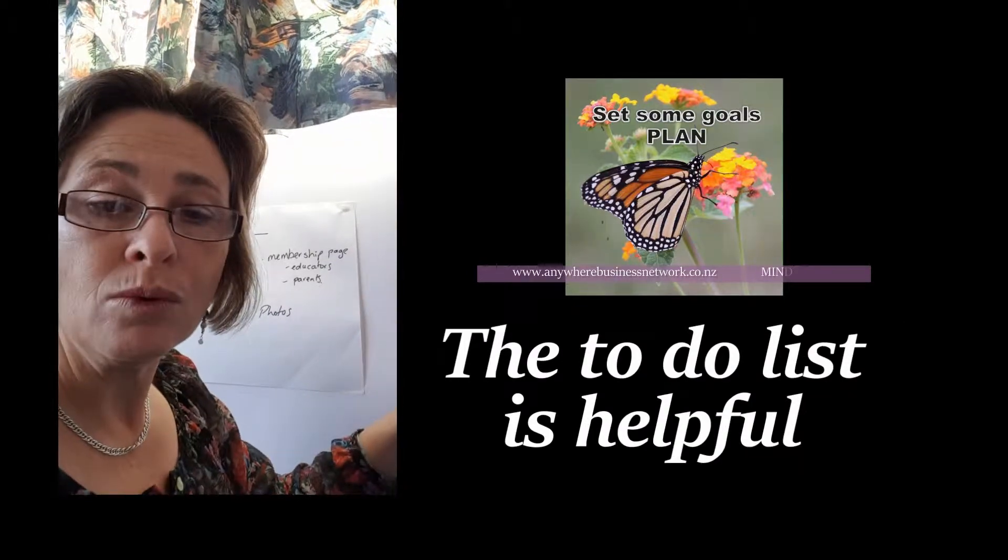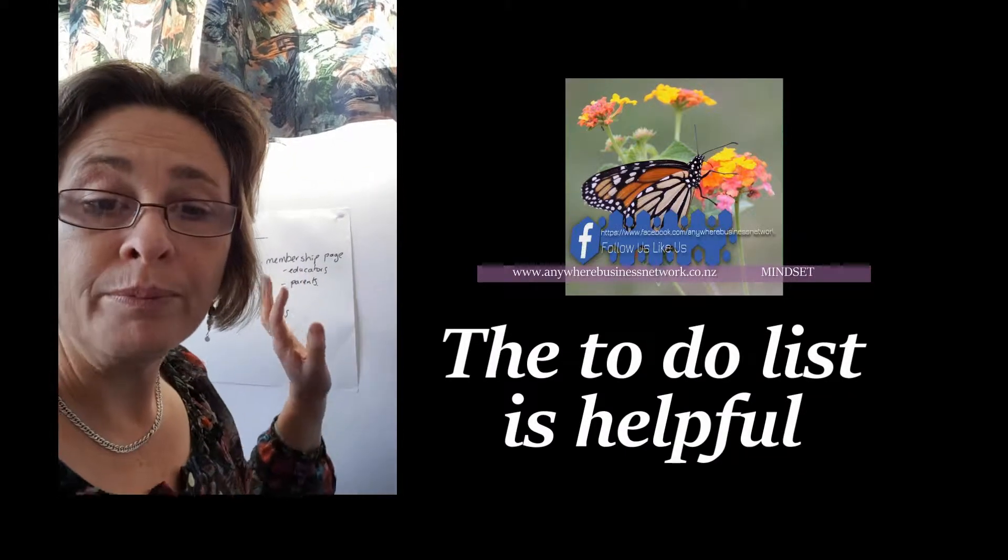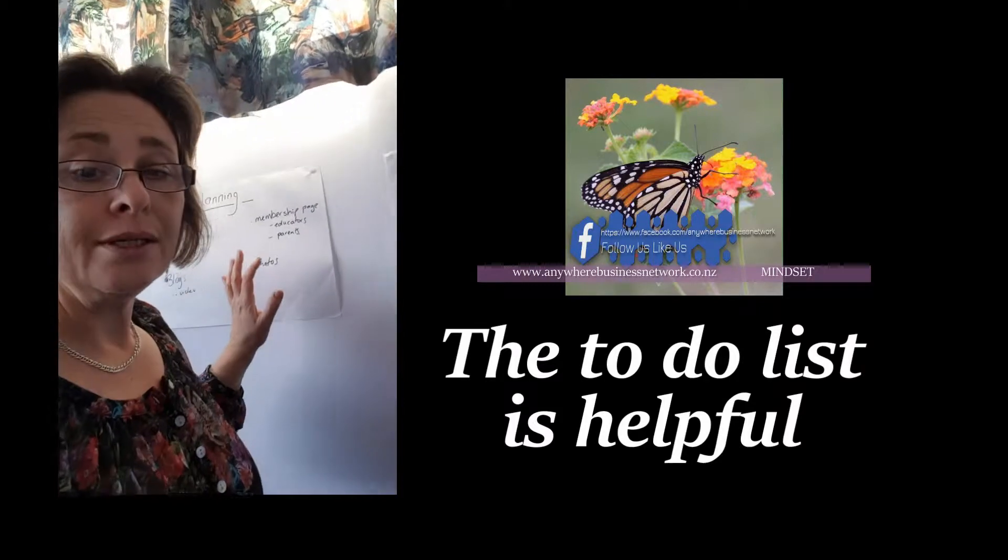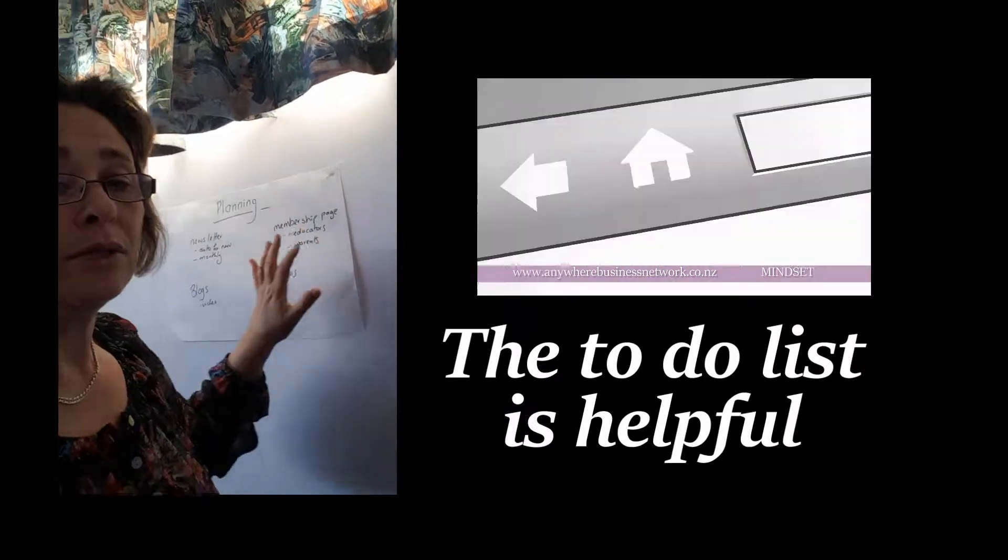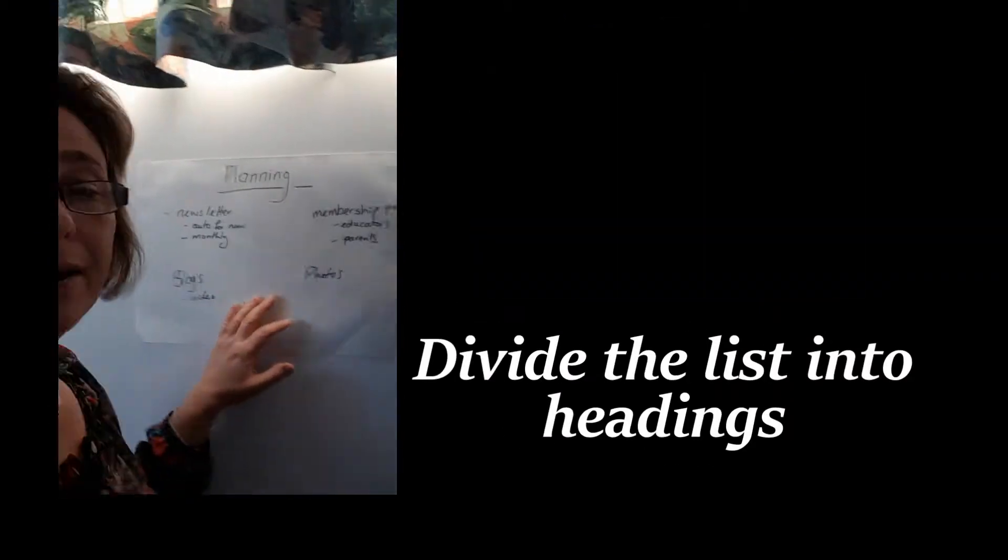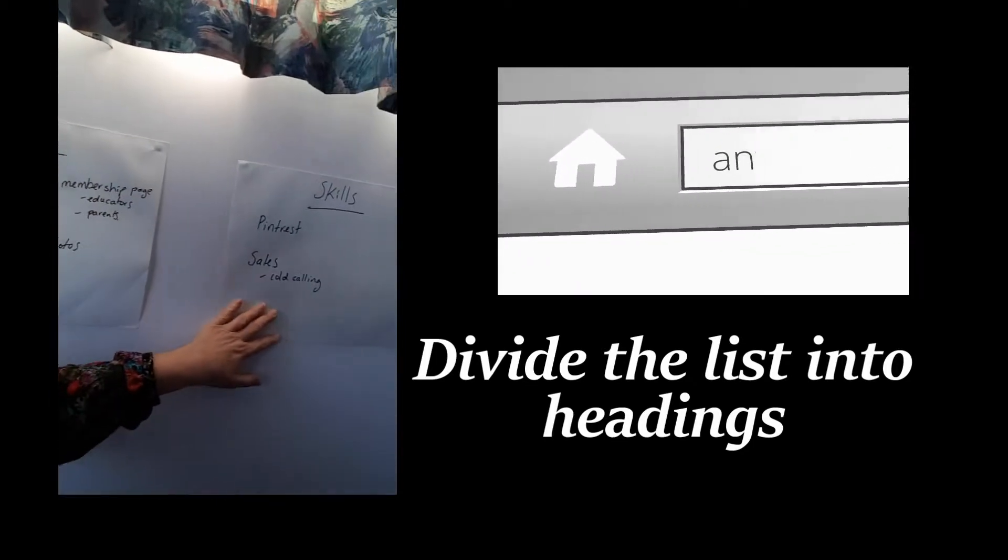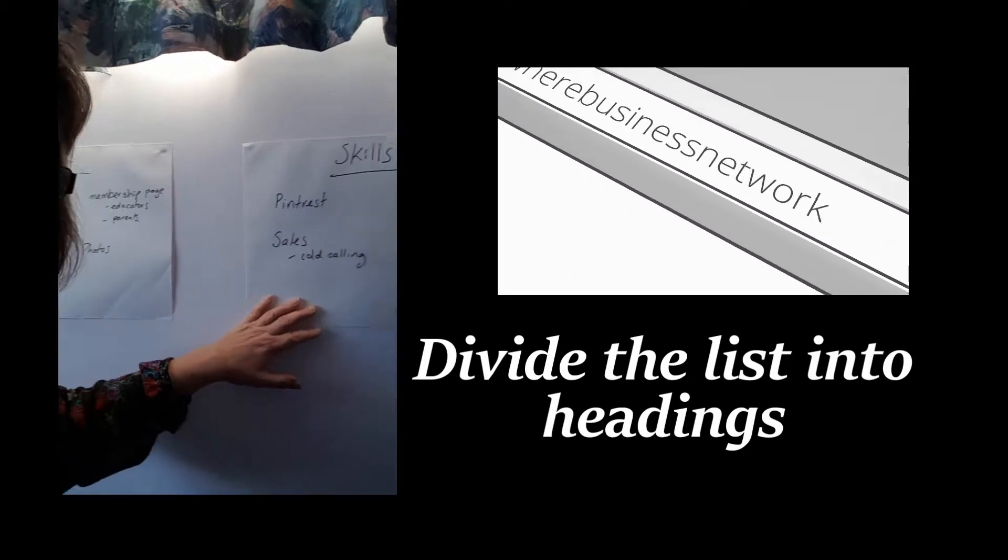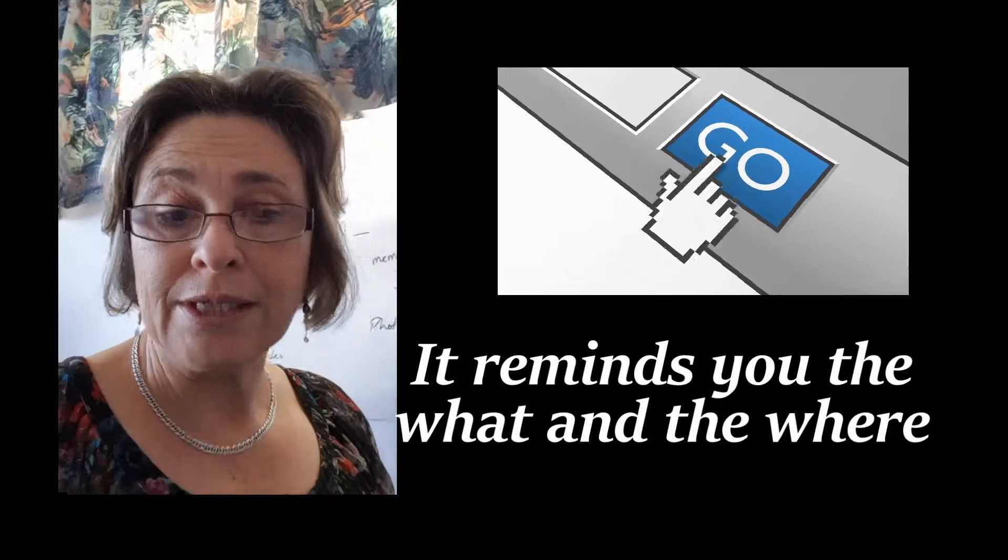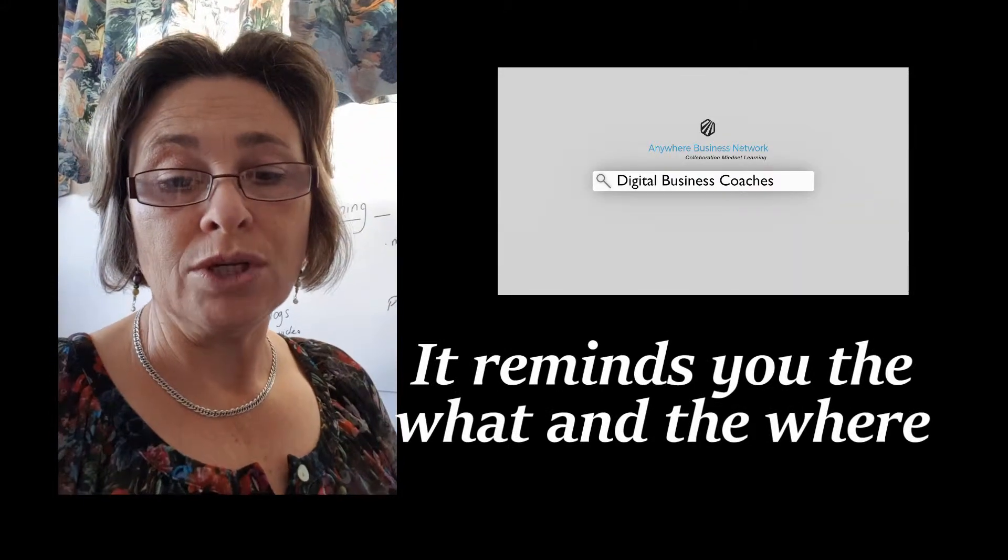So having a list on the wall, either a whiteboard or big paper, is always a good idea. I've got a couple: one for skills and one for planning. I can just keep adding to them anytime I like, and it always reminds me what I want to achieve.